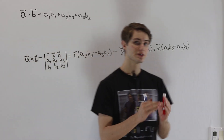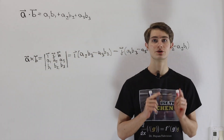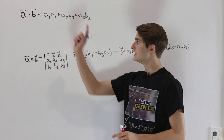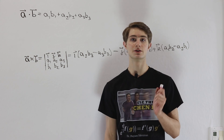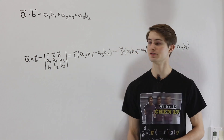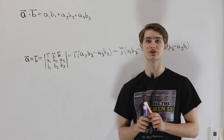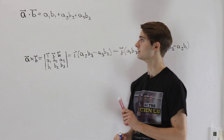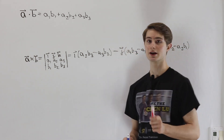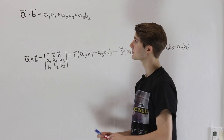We are going to figure out the formulas for the derivative of a dot product and a cross product of two vectors. This derivation is actually going to be very, very simple. It comes from this fact.